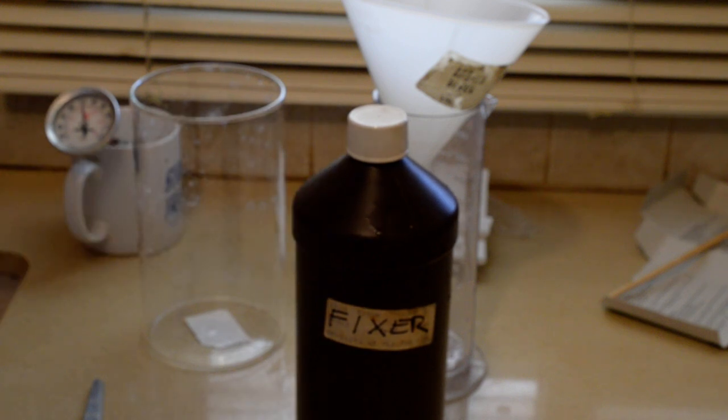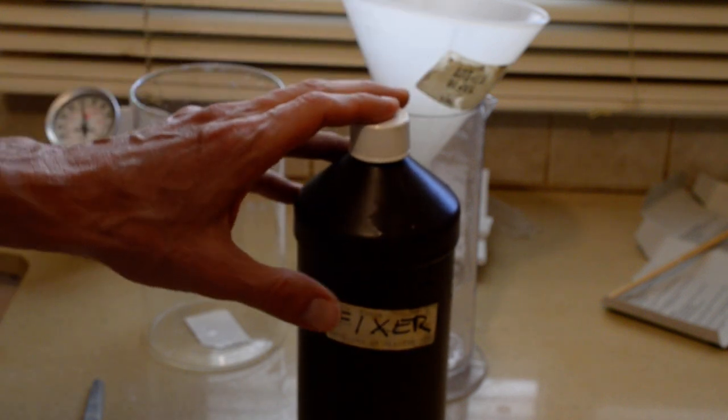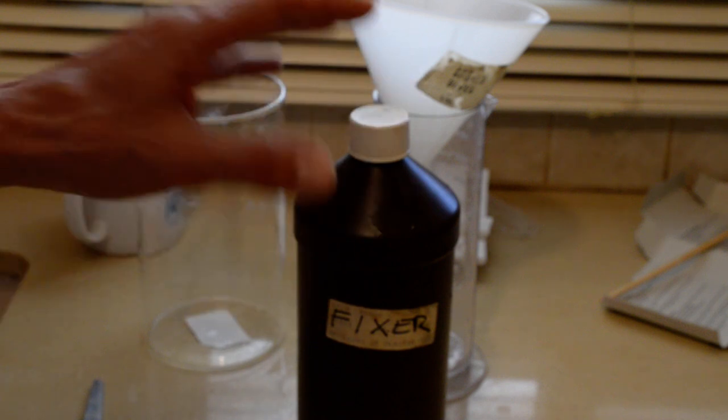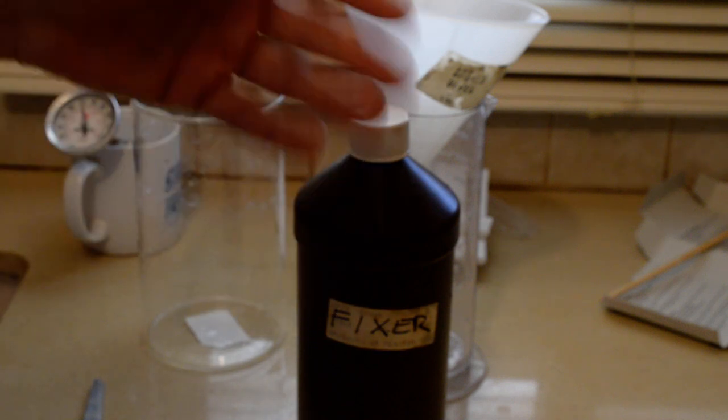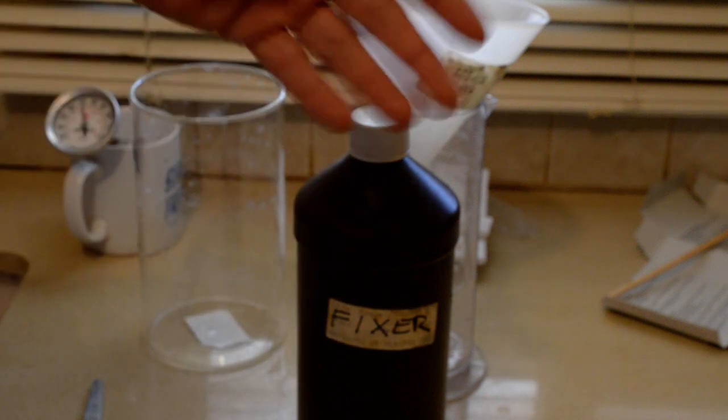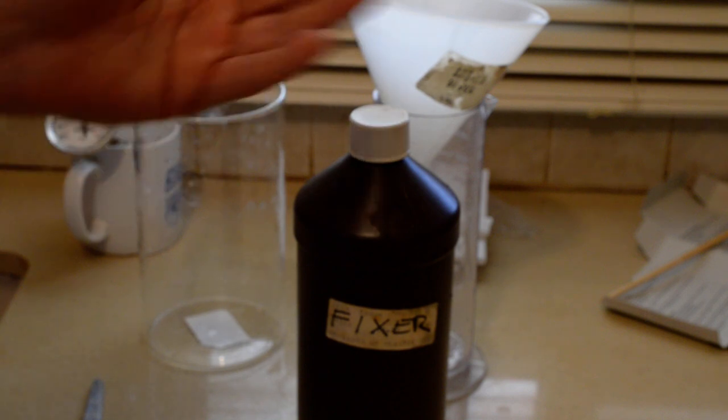Well, that's about it. That's all there is to it. We just made some fixer. You should let this get to room temperature if you can before you use it. You don't want to shock the system by pouring hot water then cold water on the film, or hot solutions then cold solutions on the film. You want your chemicals to be as close to the same temperature as reasonably possible.